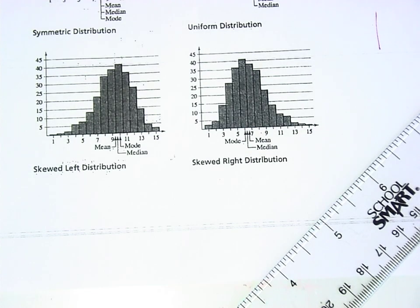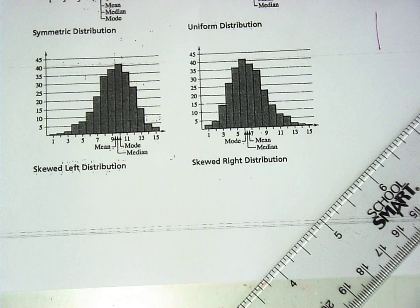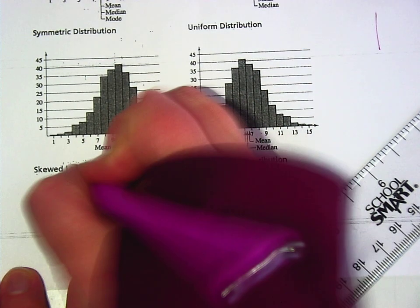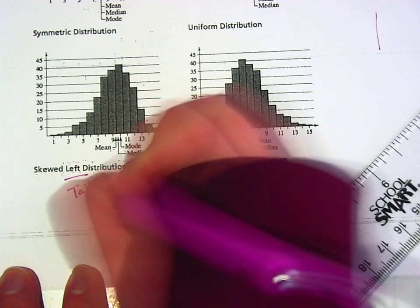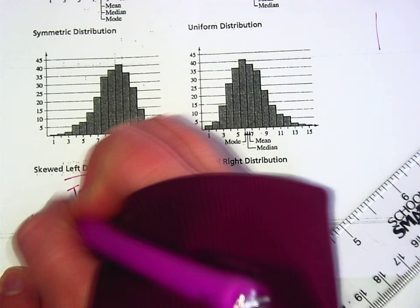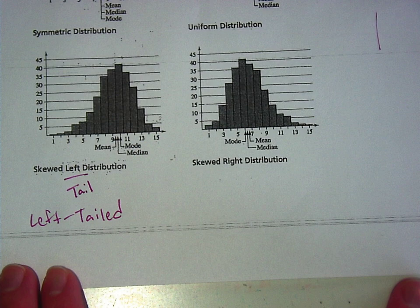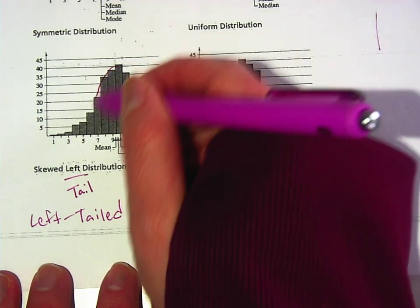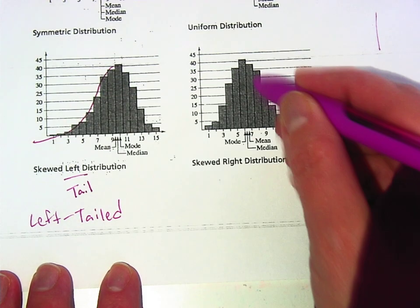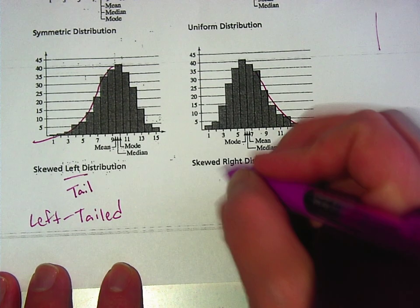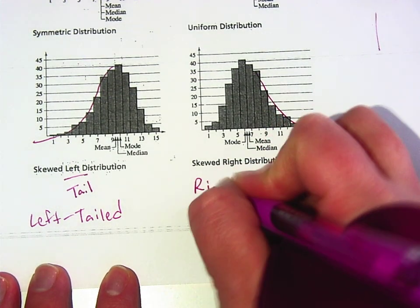Okay, this one down here on the left is a skewed left distribution. Remember that they call it by its tail. Sometimes they will call this a left-tailed distribution. Write that down. The tail is where the data kind of peters out. On this side, the data is petering out on the right, which is why this is a right-tailed distribution.